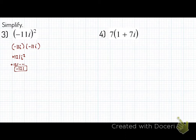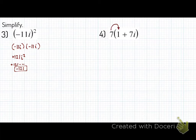Number 4. We got 7 times the quantity 1 plus 7i. Take a moment to pause the video here and try this problem out on your own. You should have paused the video and worked it out. So here we go — this is what I would have done. We got 7 times the quantity of 1 plus 7i. 7 times 1 is 7. 7 times positive 7i is positive 49i. And i — I can't simplify this i at all.